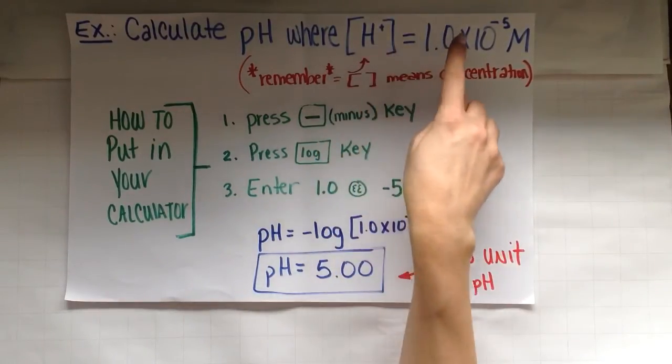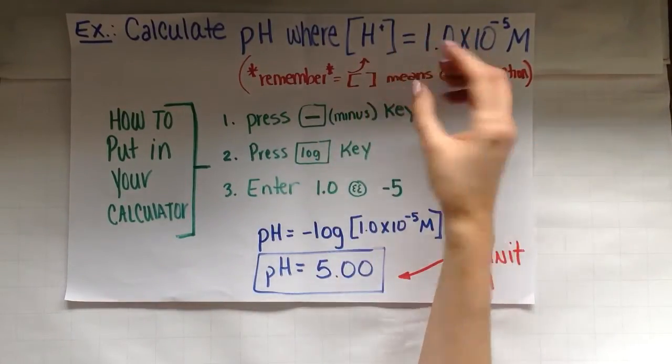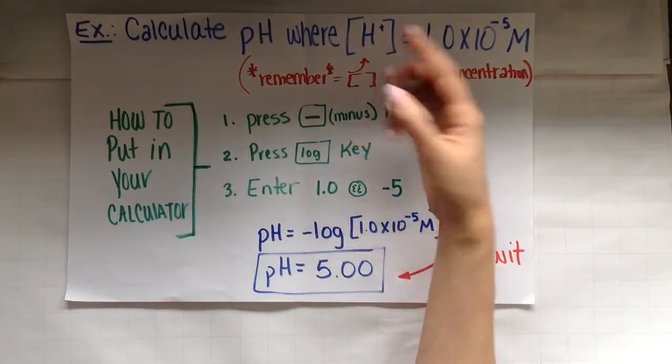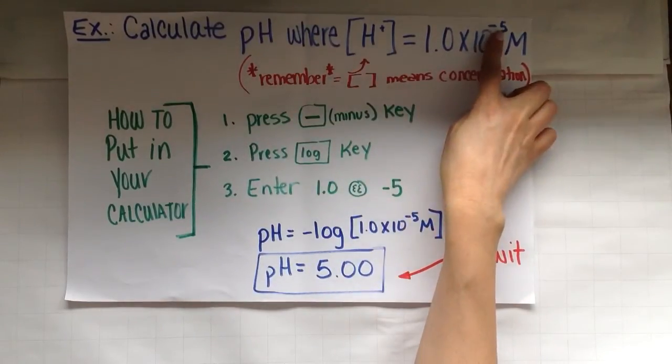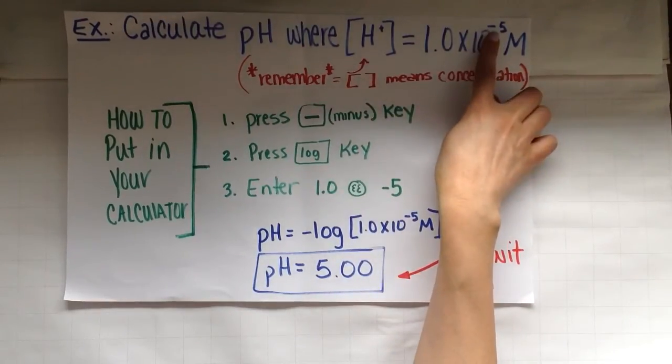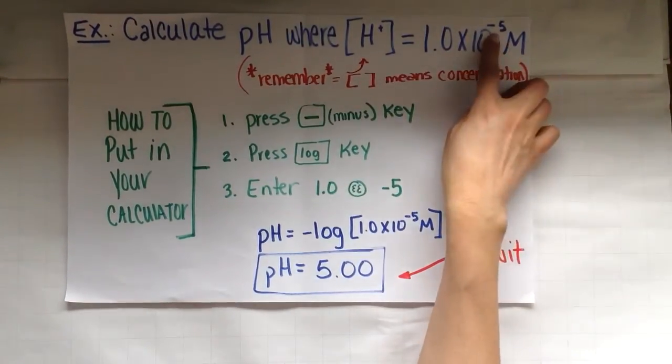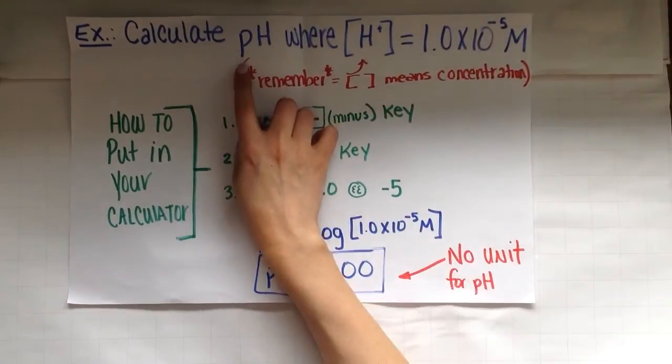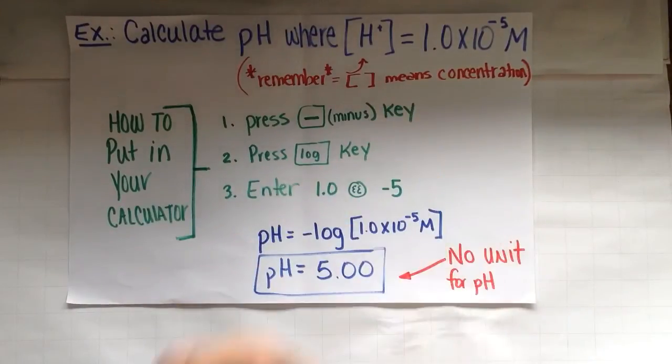So this solution has an acid in it. And the concentration of the H plus, which represents the acidity, is 1.0 times 10 to the negative five. If you remember me saying earlier, our concentrations are very small numbers. These are very small ions. So that's a really small number. We use the pH scale to give us a better number to work with. Something one through 14, hopefully.